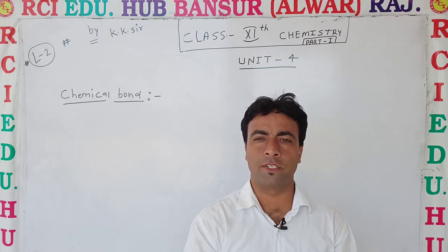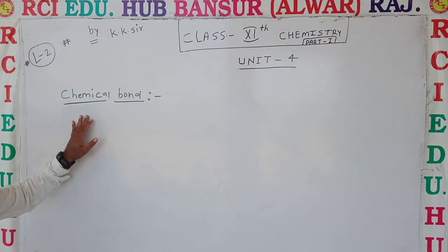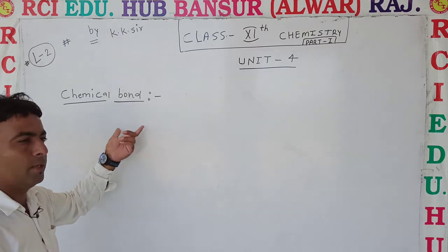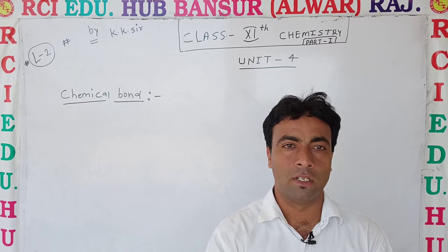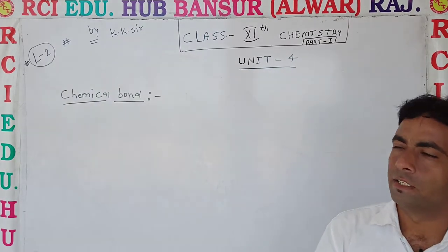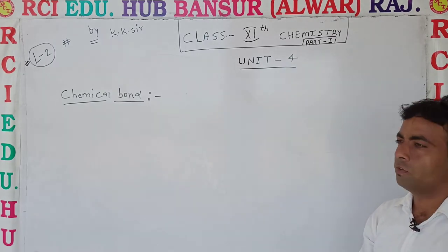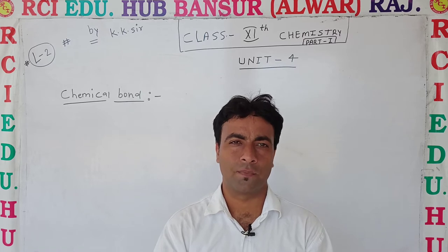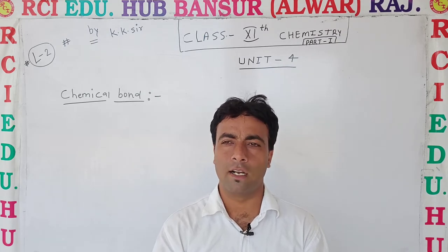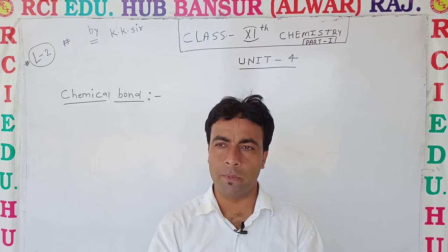Hello students, welcome to chemistry class. Today we study chemical bonds — its definition and different theories for the formation of chemical bonds. We will cover the introduction of bonds, basic structure, then Lewis structure, then VSEPR theory, then valence bond theory, and finally molecular orbital theory, which also explains formation of bonds.